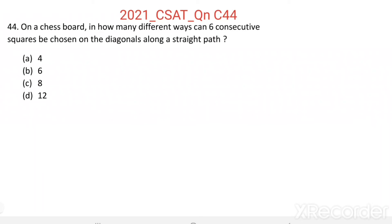Question number 44: on a chess board, in how many different ways can six consecutive squares be chosen on the diagonals? Along a straight path, we want to find in how many different ways six consecutive squares can be chosen on the diagonals of a chess board.